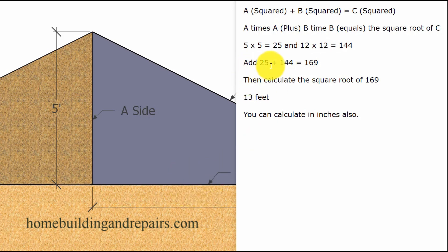And if we add these two numbers together, 25 plus 144, we get 169. And then if we calculate the square root of 169, we get 13. The length of this side, side C, would be 13.